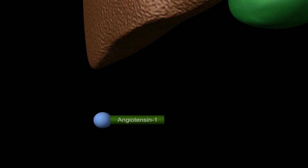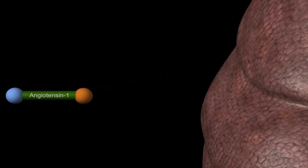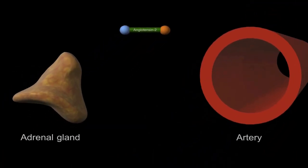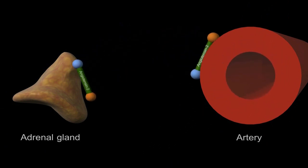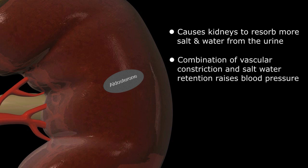A second enzyme produced in the lungs, called angiotensin-converting enzyme, or ACE, then links to angiotensin-1, converting it to angiotensin-2, the active configuration of the hormone. Angiotensin-2 then acts on both the peripheral arteries throughout the body and the adrenal glands. The arteries constrict, and the adrenal glands produce another hormone called aldosterone, which causes the kidneys to absorb more salt and water from the urine. The combination of vascular constriction and saltwater retention raises the systemic blood pressure and restores blood flow to the compromised kidney.